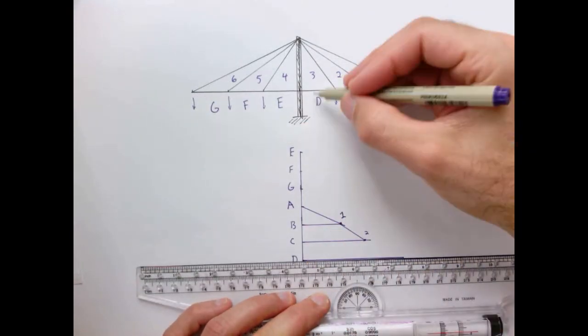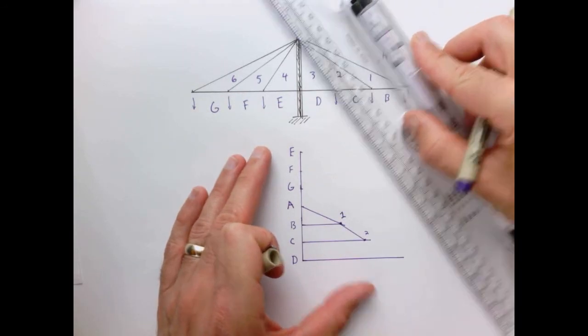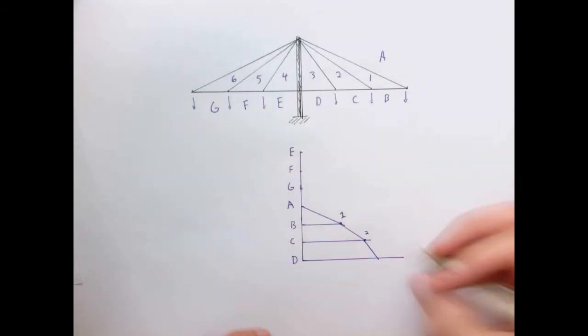Point three will also be easy to find. Another horizontal line connecting to point three, and the line with this particular angle here of that cable. So where those two lines intersect is point three.